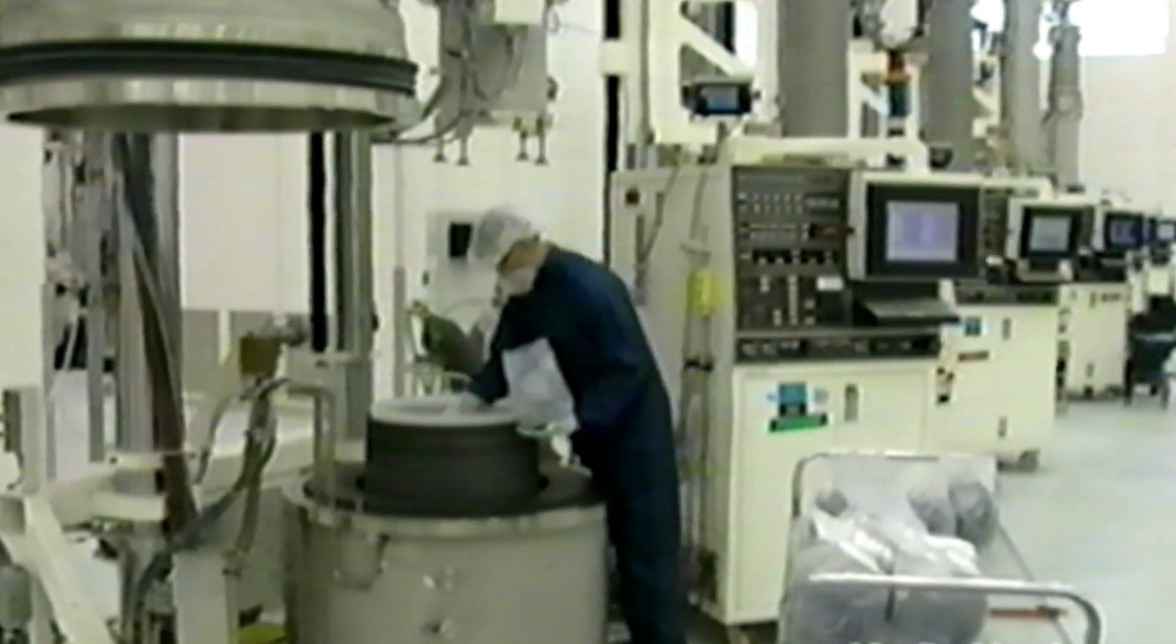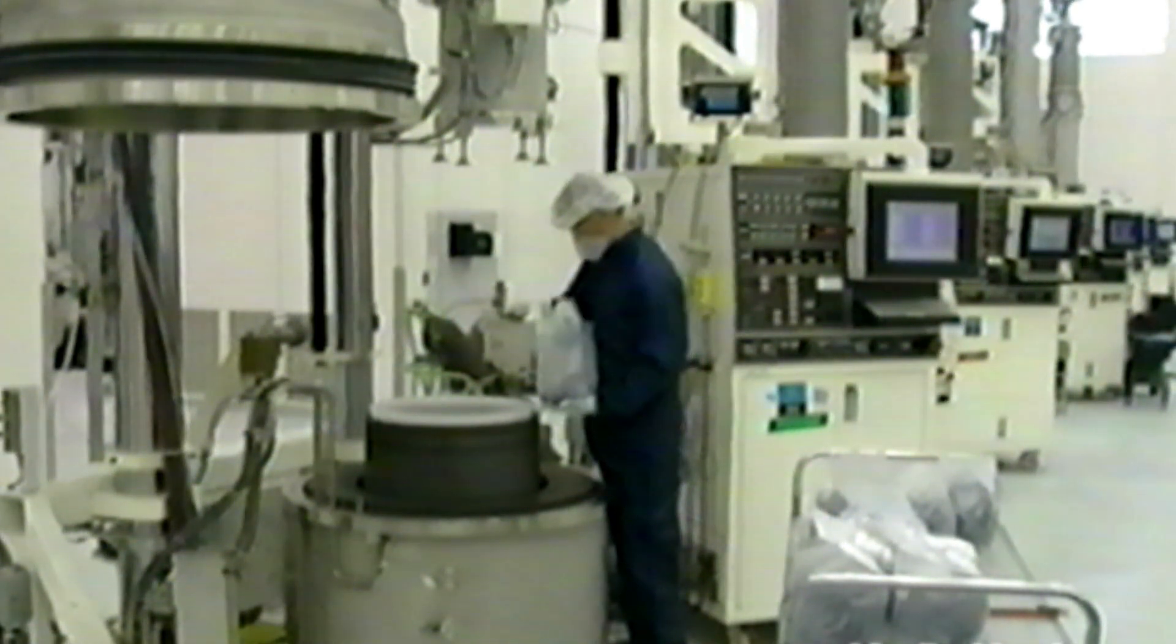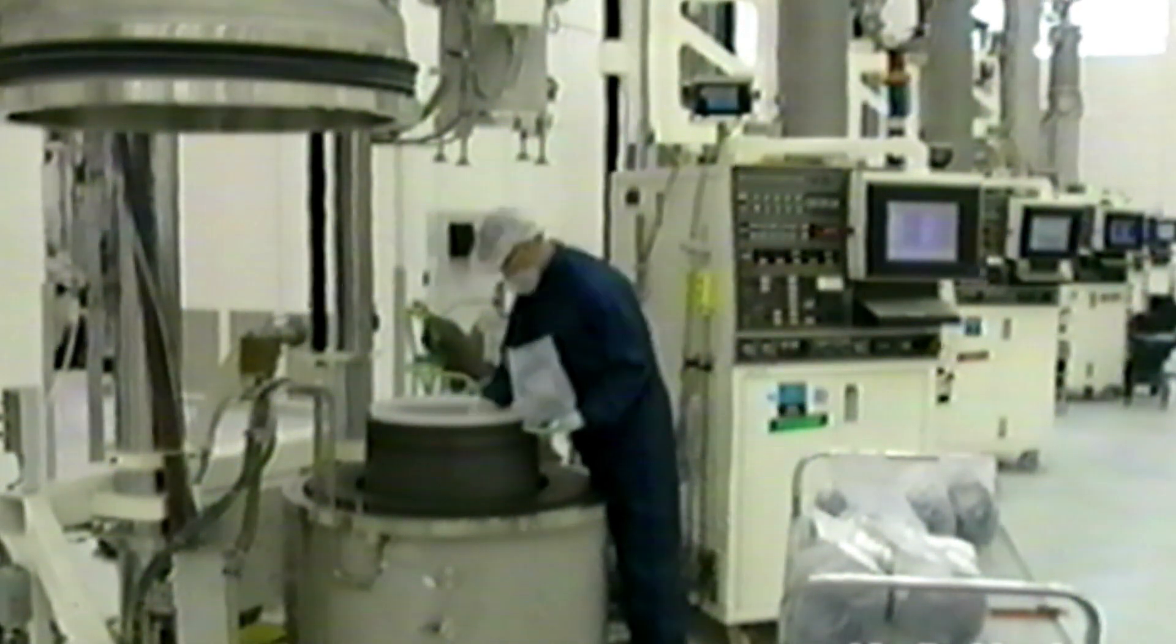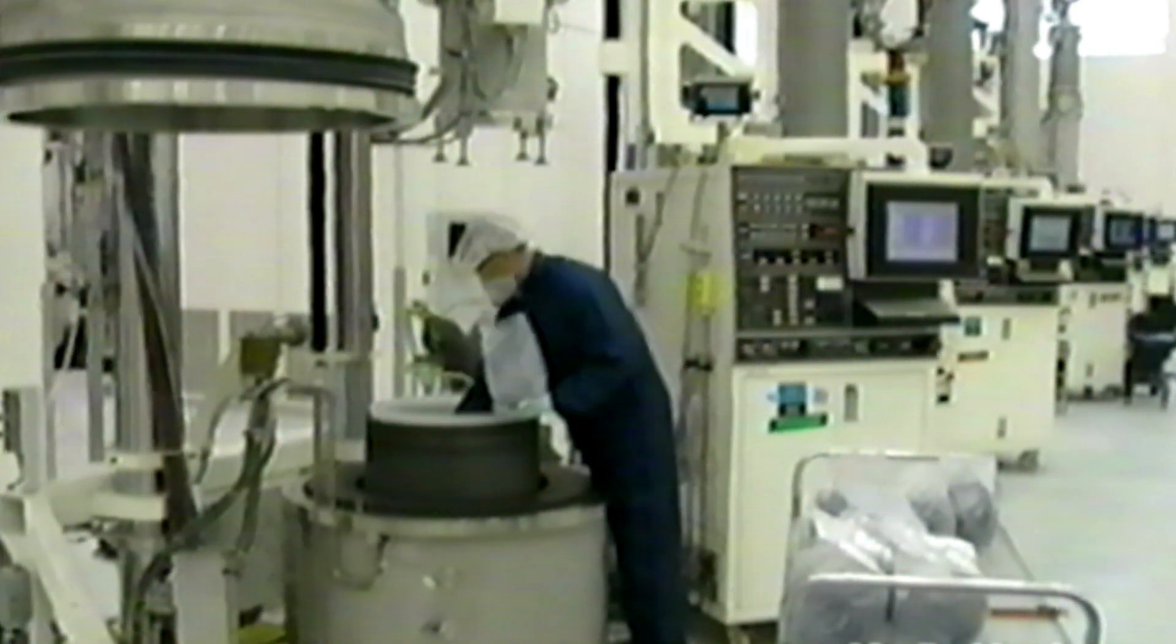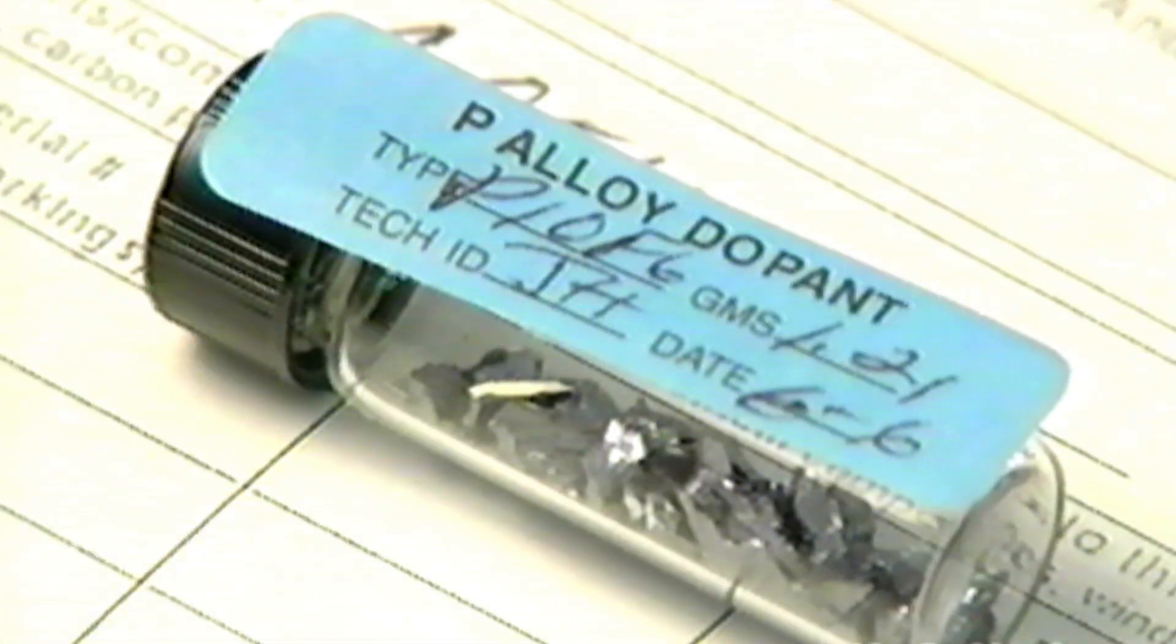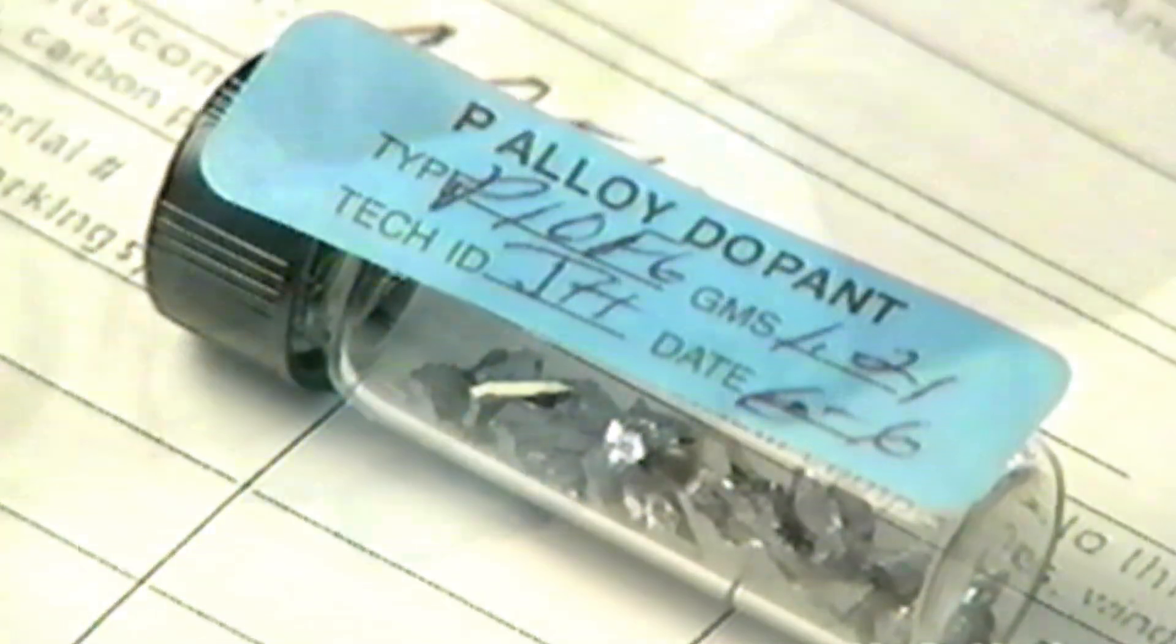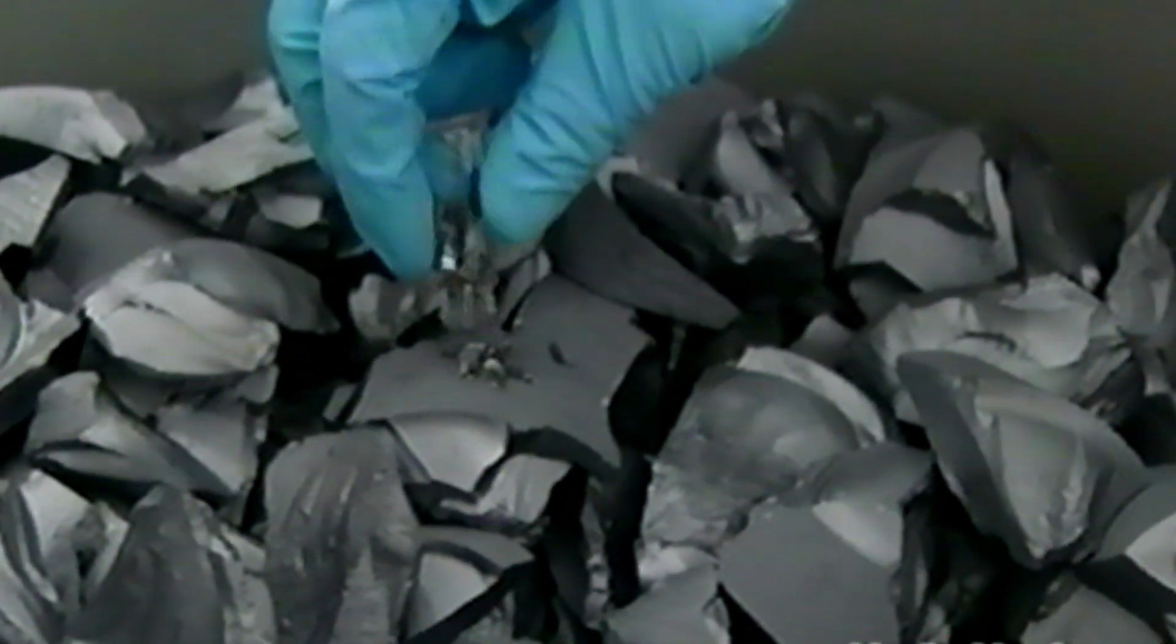The quartz crucible rests inside the puller growth chamber on a pedestal, surrounded by a large graphite heater. The heater will provide sufficient thermal energy to melt the entire charge of polysilicon. A precise amount of dopant is then added to the charge, giving the crystal its electrical characteristics, typically boron for P-type silicon or phosphorus for N-type silicon.